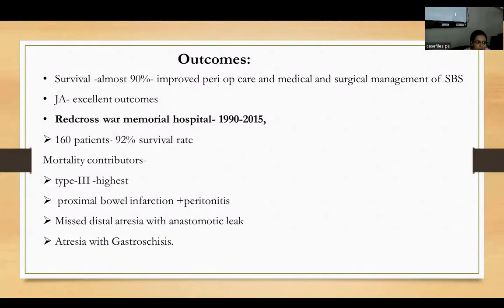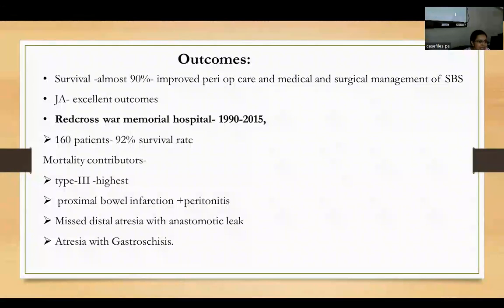Jejunal atresia has excellent outcomes. As per a study from Red Cross War Memorial Hospital involving 160 patients, the survival rate was 92%. Main mortality contributors were type IIIb jejunal atresia with the highest mortality, followed by type IIIa, then type II. Other contributors included proximal bowel infarction with peritonitis, missed distal atresia with anastomotic leak, and atresia with gastroschisis.